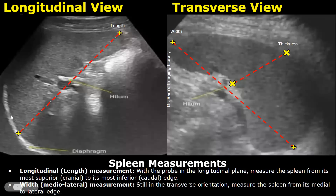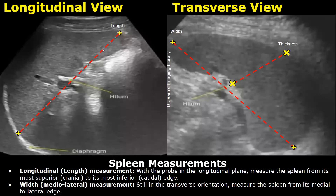Place the second caliper at its inferior edge in this manner, and you will obtain the splenic length. This is its craniocaudal measurement.